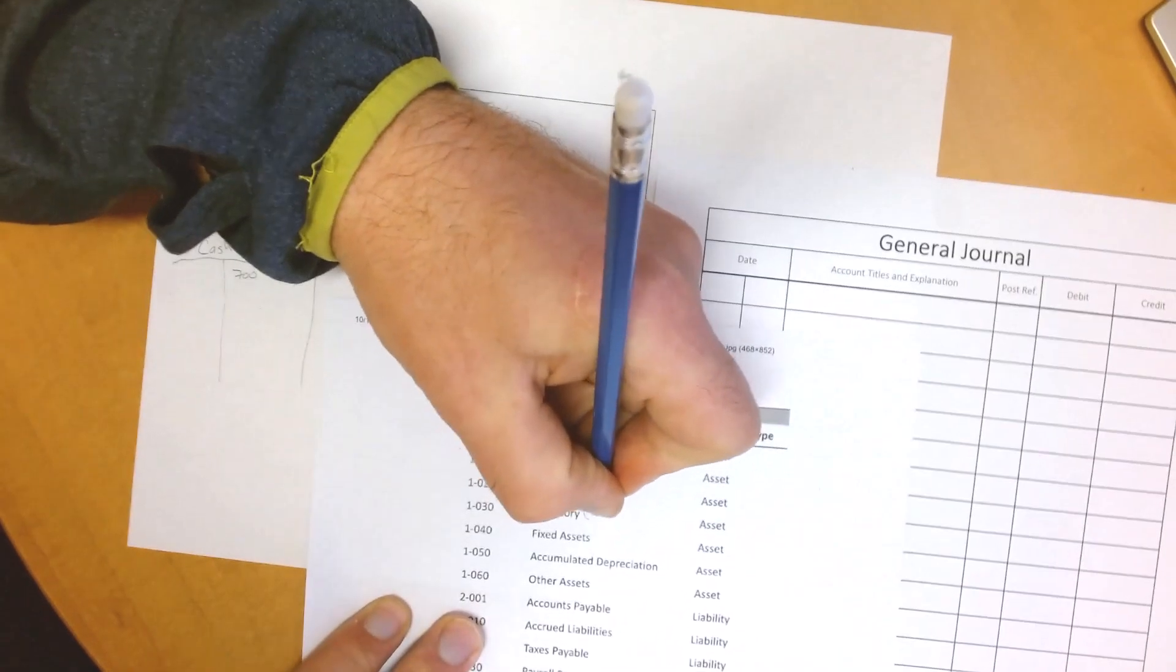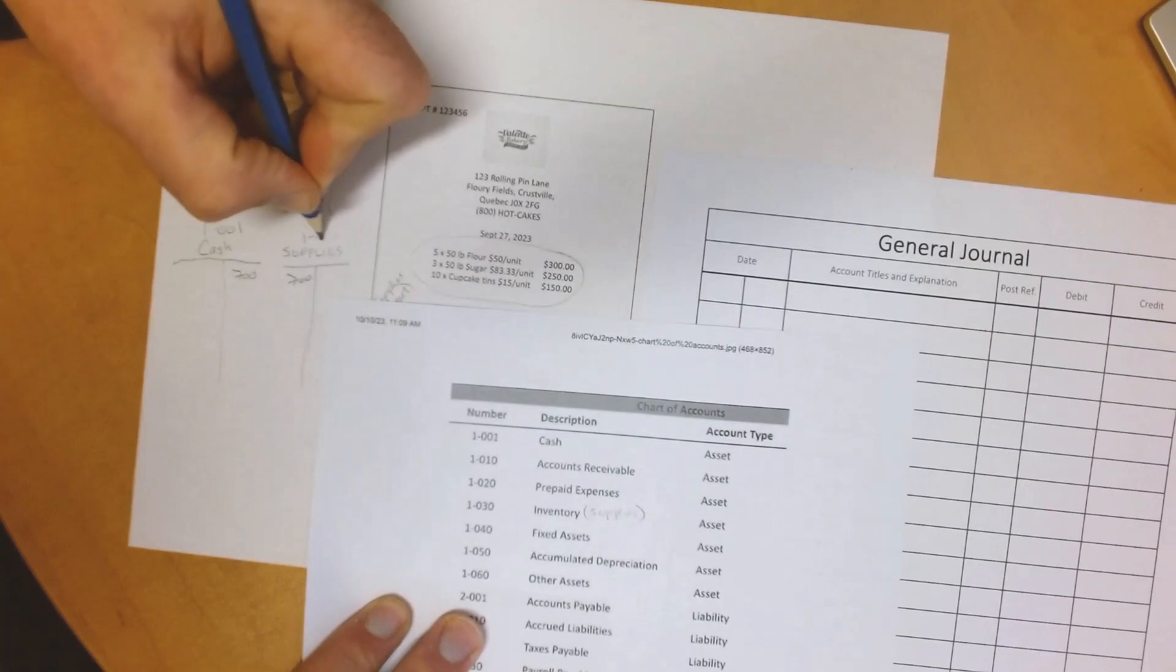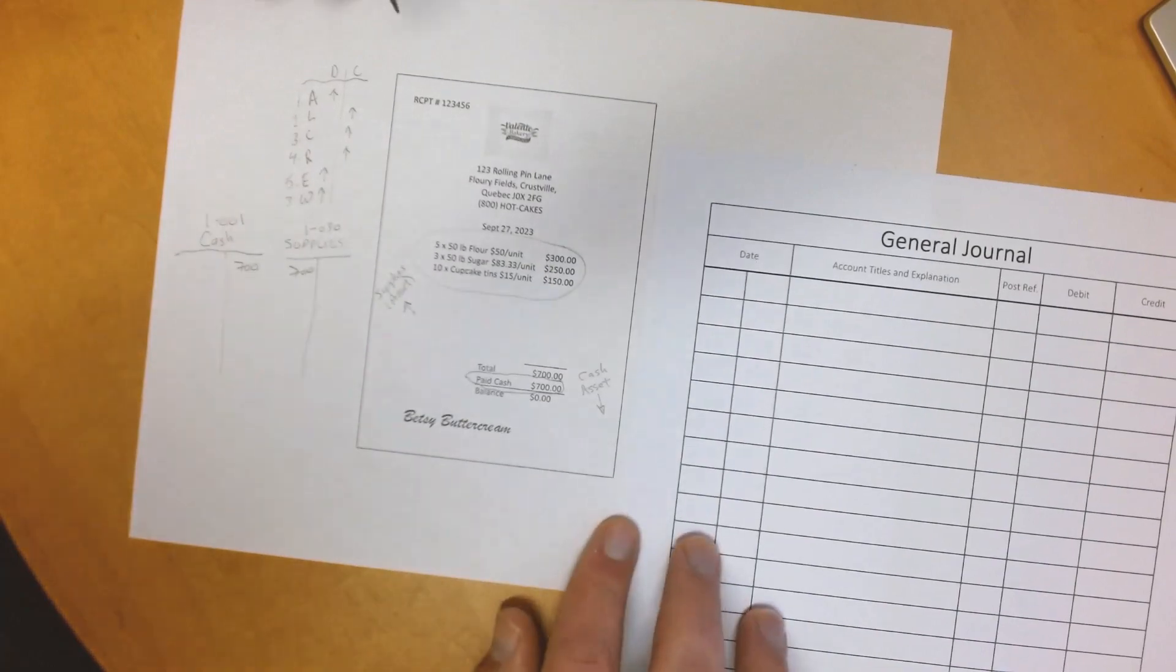Cash will be 1001, not 1010 like I wrote down. And for supplies, we will use Inventory 1030. We can get rid of the dash as this is not a normal practice.